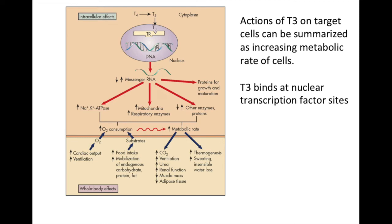This diagram shows what happens to cells stimulated by thyroid hormone. T4 is converted into T3, and T3 activates the thyroid receptor, which then starts synthesis of many proteins that increase cell activity. As a result, you get an increase in cardiac output, increased oxygen consumption due to more mitochondria, more respiratory enzymes, increased food intake, more carbon dioxide breathed off, more excretory products produced, and ultimately thermogenesis and sweating.